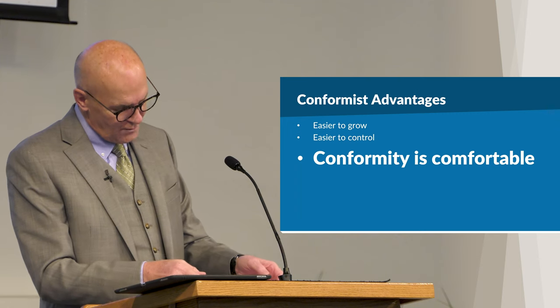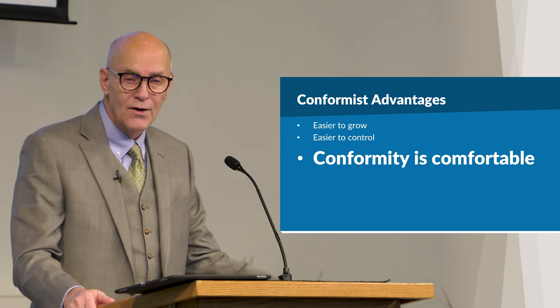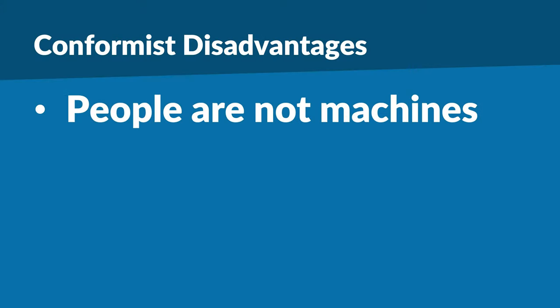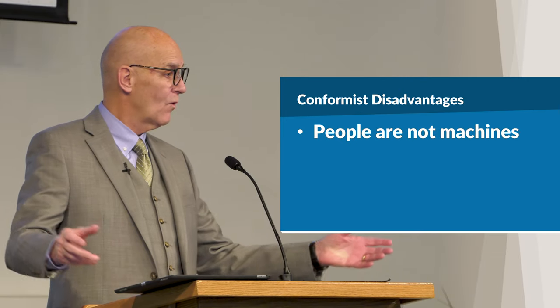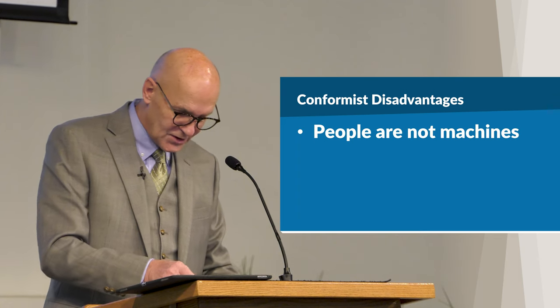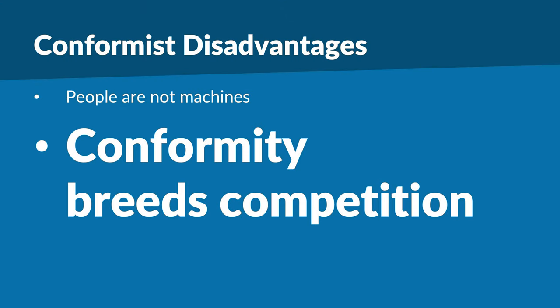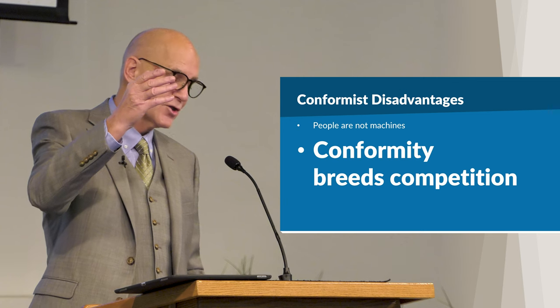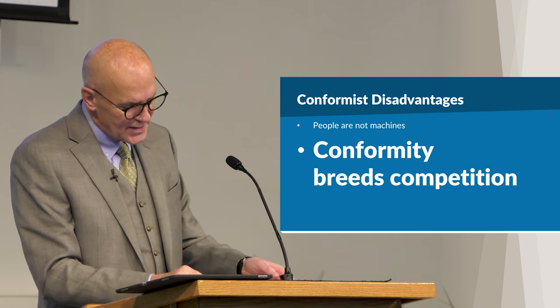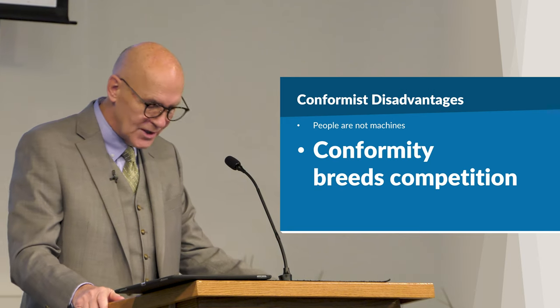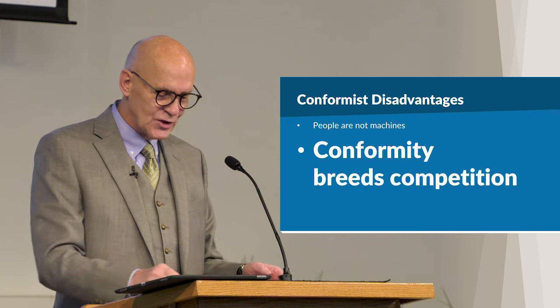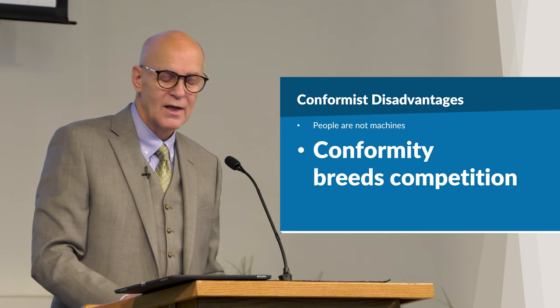There's also a downside to conformity as an approach to establishing and maintaining a religious group. For example, people are not machines. People like to ask questions, people want to express themselves — this causes turmoil in a conformist group. Another downside: conformity breeds competition. People within the group begin to compete to find who conforms the best and thus rise up in leadership. In conformist groups, leadership is based on performance, and performance stimulates competition, and competition produces rivalry, and rivalry produces jealousy and all kinds of negative emotional sinfulness.